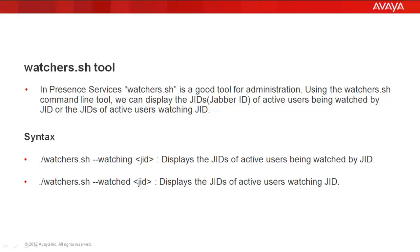Here is the syntax for the commands. First is: ./watchers.sh --watching followed by the jobber ID of a user. This command displays the jobber IDs of active users being watched by that single jobber ID. The second command is: ./watchers.sh --watched followed by a jobber ID. This displays the jobber IDs of active users watching that single jobber ID.